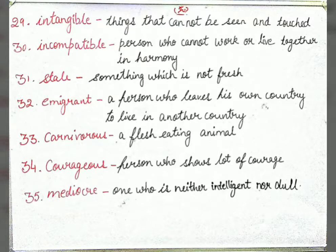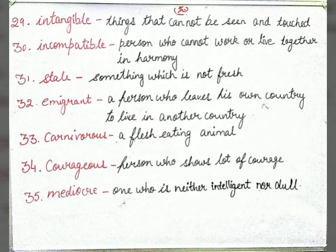Next is 'stale' — something which is not fresh. Jo cheez fresh nahi hai, baasi padi hai use stale kehte hain. Next is 'emigrant' — a person who leaves his own country to live in another country. Next is 'carnivores' — a flesh-eating animal. For example: lion, tiger.